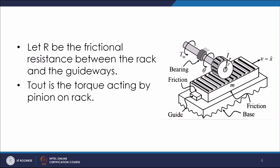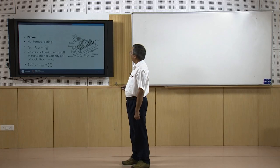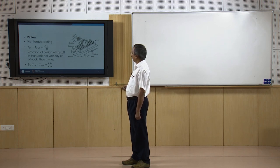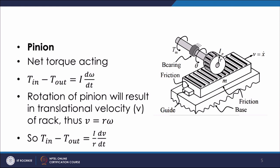The rotation of the pinion results in a translational velocity V of the rack, given by V equals r times omega, where r is the radius and omega is the angular velocity of the pinion. Substituting omega in terms of V and r, I can write the pinion equation as: T_in minus T_out equals (I/r) times dV/dt.